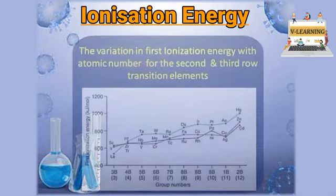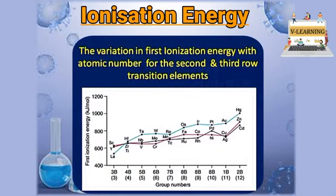As we can see in the graph, the first ionization enthalpy of the third series — shown by the green line — shows that lanthanum's ionization enthalpy is very low, and there is a rapid increase across the third transition series. The maximum first ionization enthalpy in this series is because of lanthanide contraction.